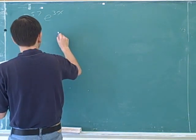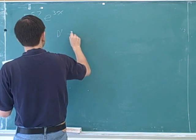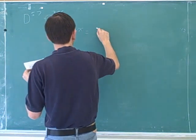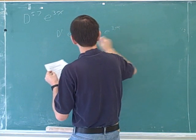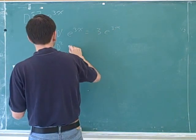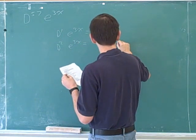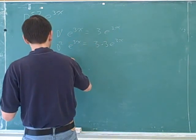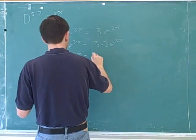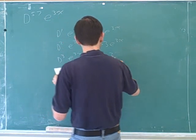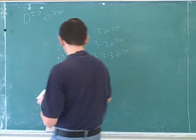So here I would look for the pattern. The first derivative of e to the 3x is 3e to the 3x. The second derivative would be 3 times 3, e to the 3x. The third derivative would be 3 times 3 times 3, e to the 3x.